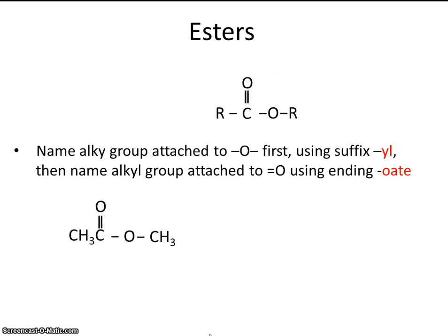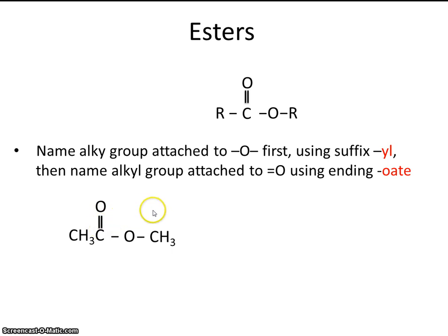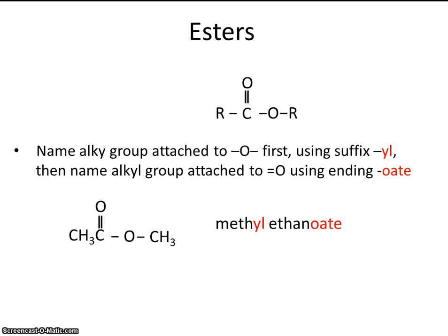Here's an example. One R group is attached to the singly bonded oxygen — that's one carbon, so that's methyl. Attached to the doubly bonded oxygen we have two carbons — including the carbon doubly bonded to the oxygen. One carbon is methyl, two carbons is ethyl. We name the singly-bonded side first with '-yl,' and the doubly-bonded side second with '-oate.' So the name of this compound is methyl ethanoate.